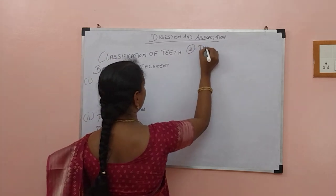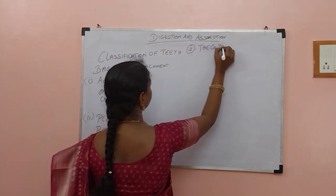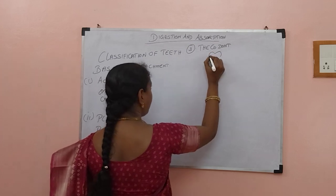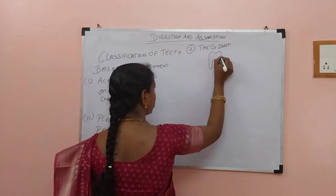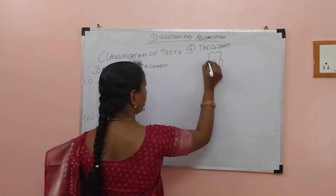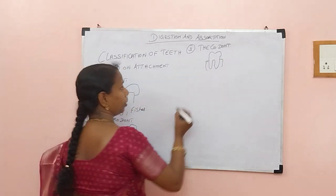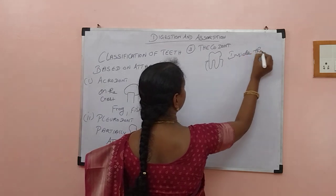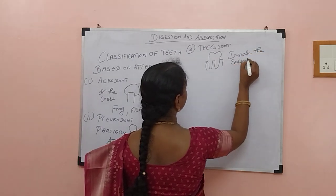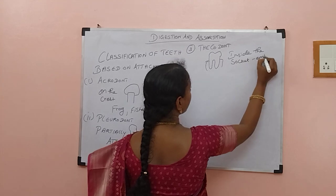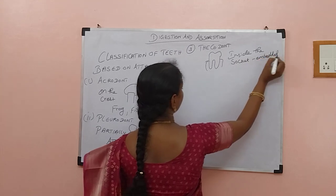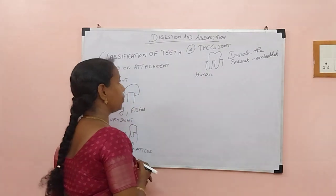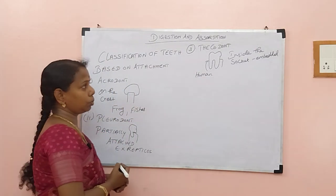The third type is called thecodont, where the teeth are embedded inside the socket. You can see the socket is here and the teeth are embedded inside — fully inside the socket it is embedded. Of course, humans are an example. So these are the three classifications based on attachment.